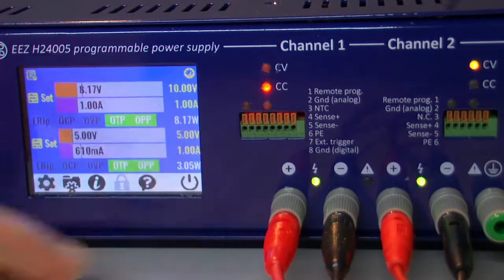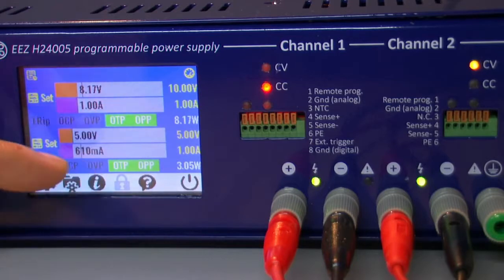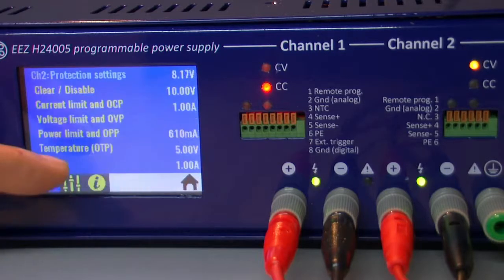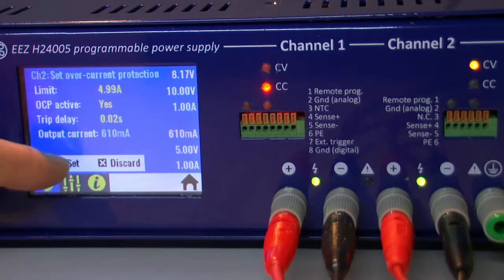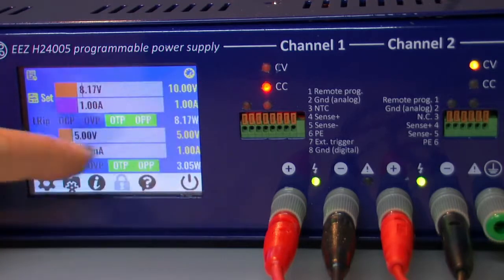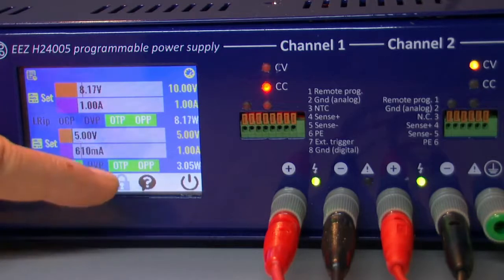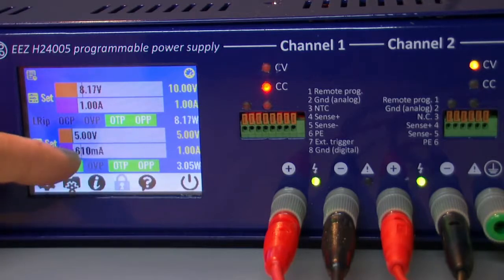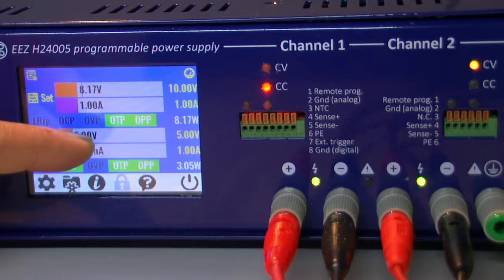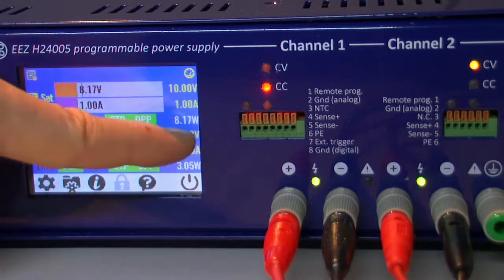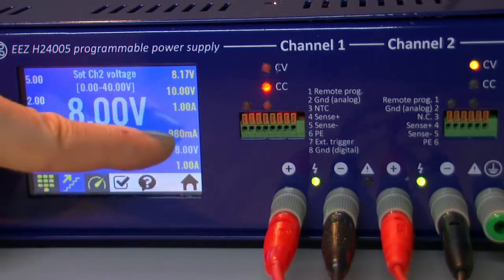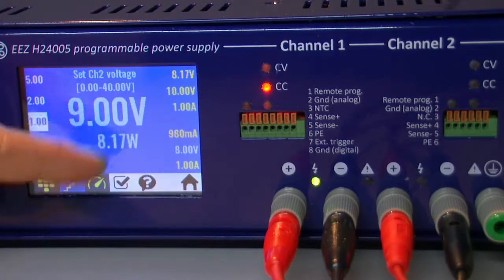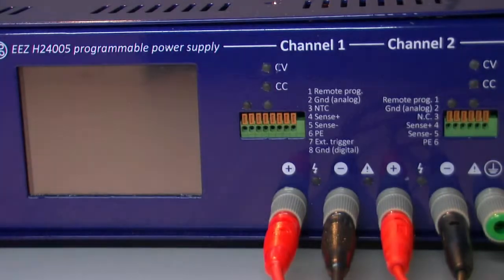And now we can provoke one of the protections, let's say over-current on channel 2. And now we just need to increase the voltage. That current is over 1A and everything goes down.